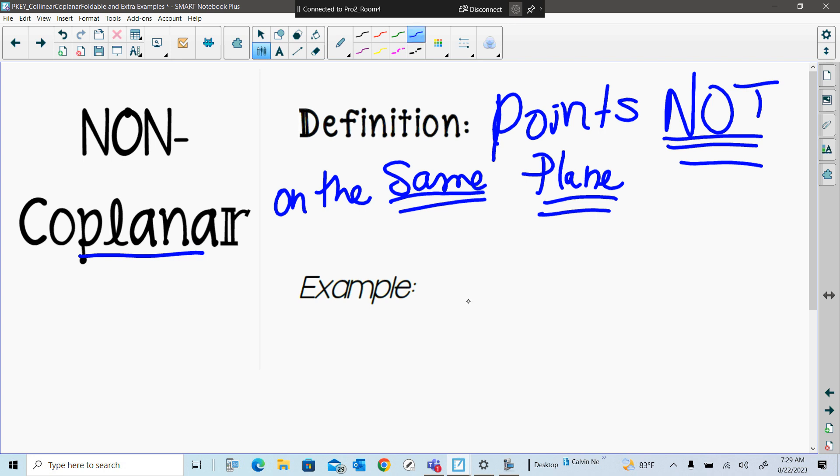So first start off with your plane, draw your parallelogram. Make this plane T. Then we're going to have points coplanar, so we need to have points on the plane. I'm going to do L and M. To show P is non-coplanar, L and M has to be inside the parallelogram. P cannot be, so I'm just going to draw an arrow and show that this is the example. This is your non-coplanar point.